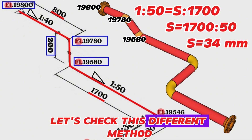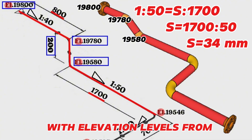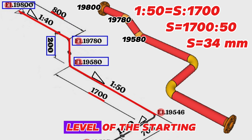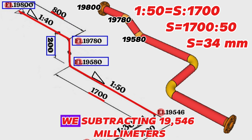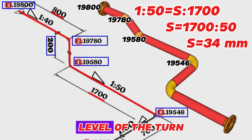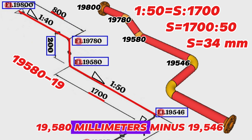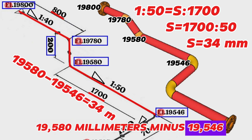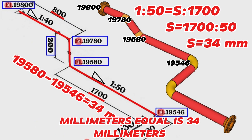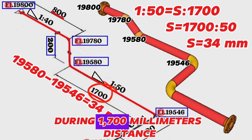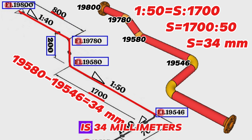Let's check this with a different method using elevation levels. From 19,580 millimeters, which is the height level of the starting point of this part, we subtract 19,546 millimeters, which is the height level of the turn point. 19,580 minus 19,546 equals 34 millimeters. It means the slope of this part of the pipeline over 1,700 millimeters distance is 34 millimeters.